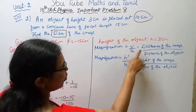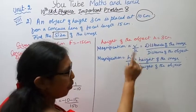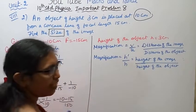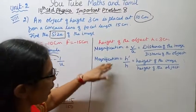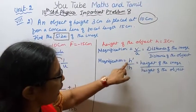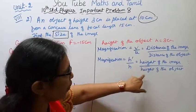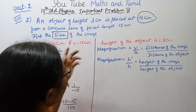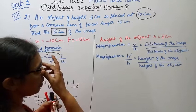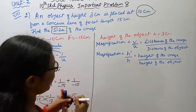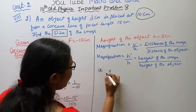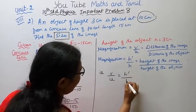Magnification is v by u, that is distance of the image by distance of the object. Also, magnification equals h dash by h, that is height of the image by height of the object. These are the two magnification formulas. So v by u equals h dash by h.